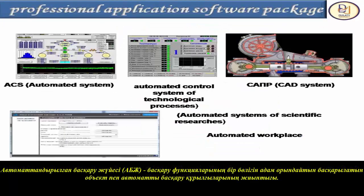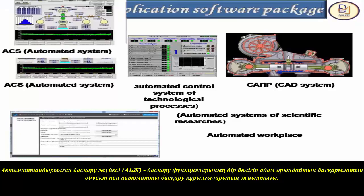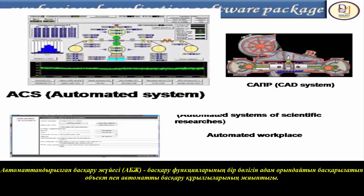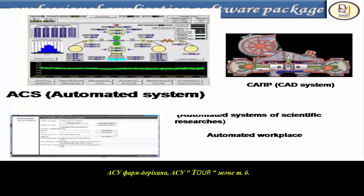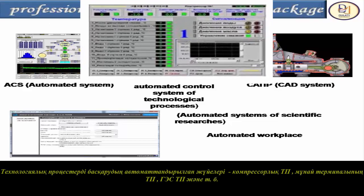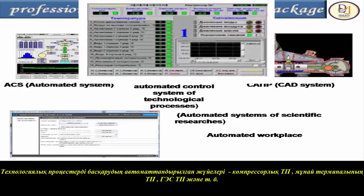An Automated Control System (ACS) is a set of control objects and automated control devices in which part of the control functions is performed by a person. Examples include: ACS Pharmacy, ACS Tour. An Automated Process Control System (APCS) includes: compressor APCS, oil terminal APCS, HPP APCS, and others.